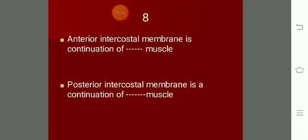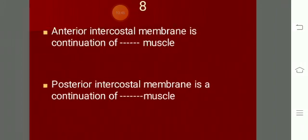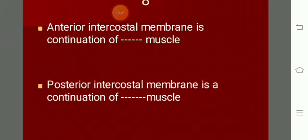The anterior intercostal membrane is a continuation of the external intercostal muscle. The posterior intercostal membrane is a continuation of the internal intercostal muscle. The three intercostal muscles are: external, internal, and innermost.